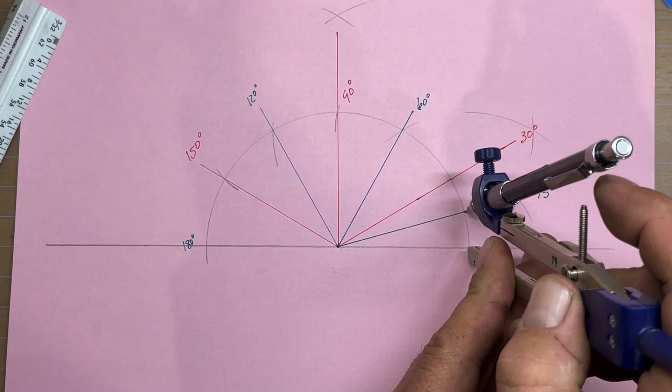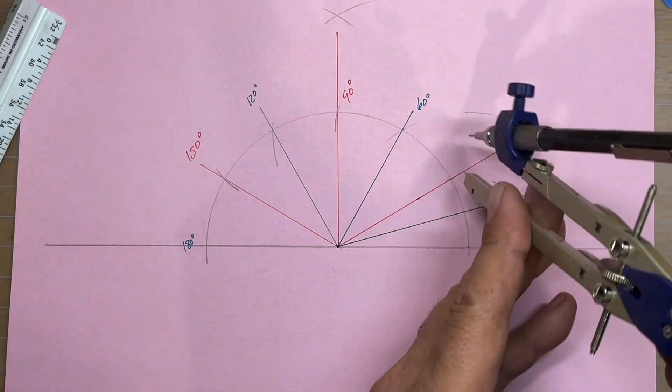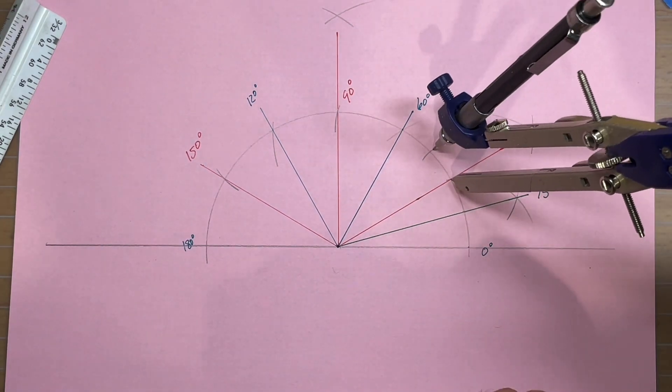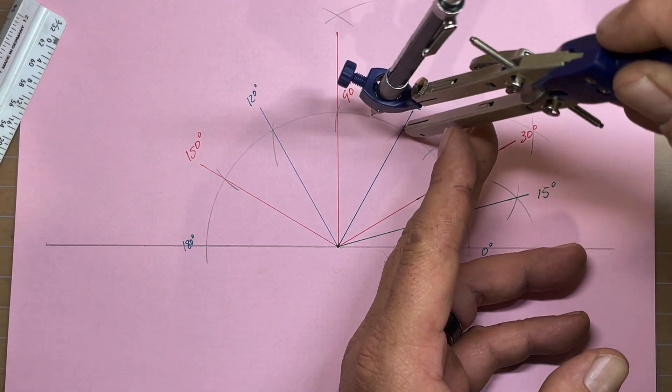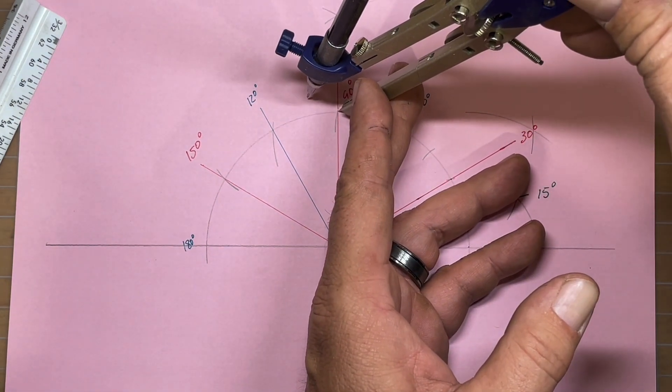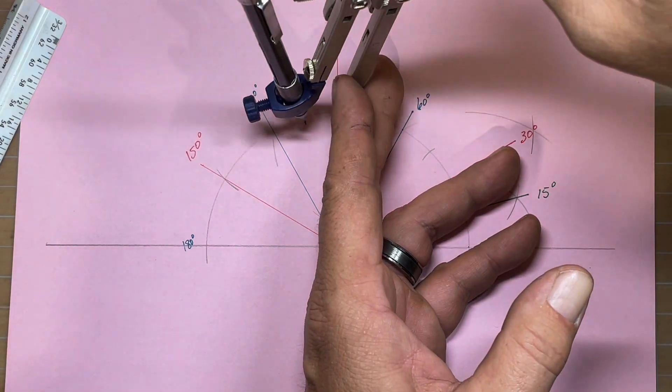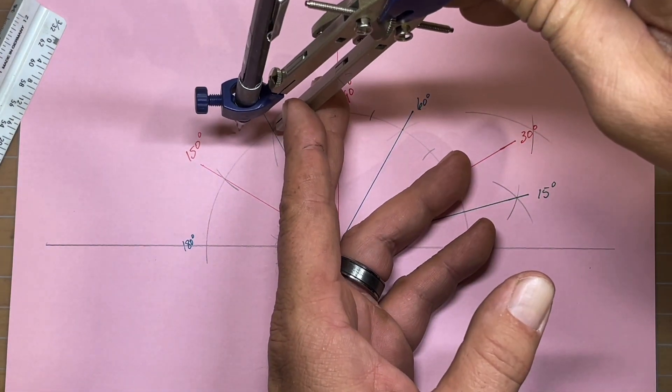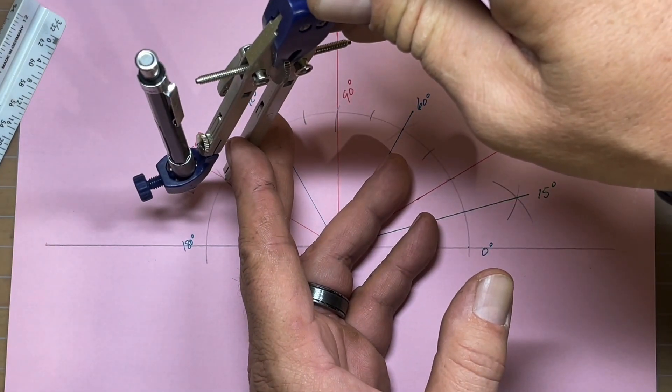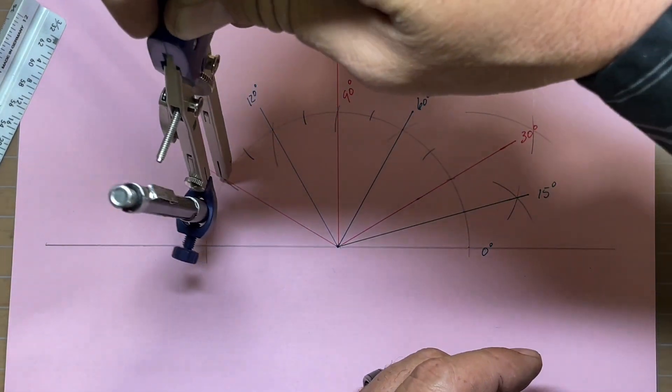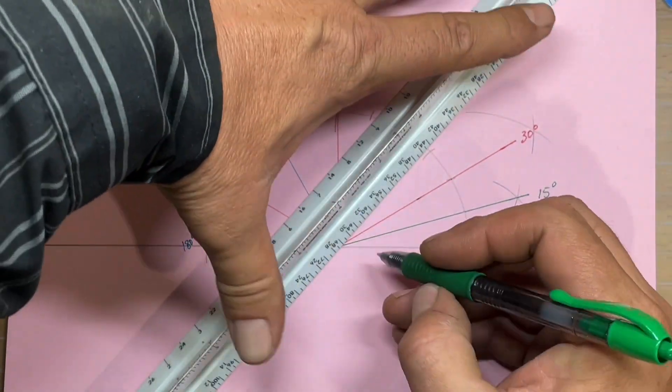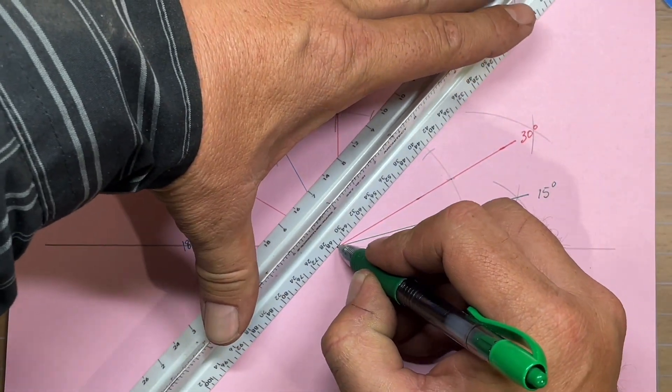So we'll just rotate down, about right there. We'll go to our 30 degree, strike an arc. We'll go to our 60 degree, strike an arc. We'll go to our 90 degree and just continue this all the way around, and this will bisect each one of those separate 30 degree angles, which will then split our compass here into 15 degree increments.